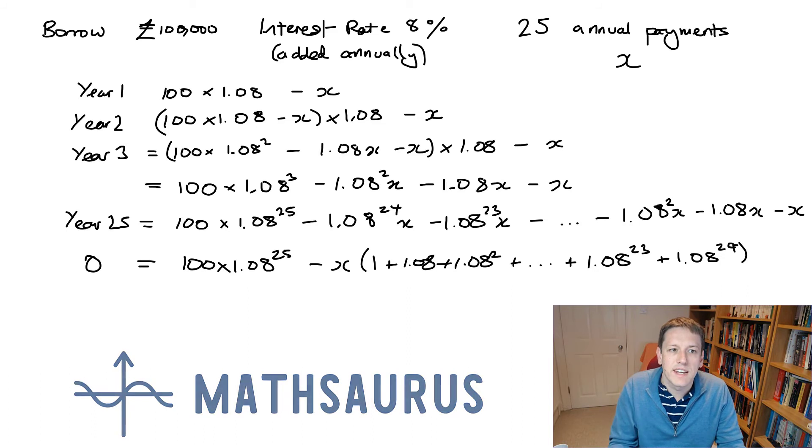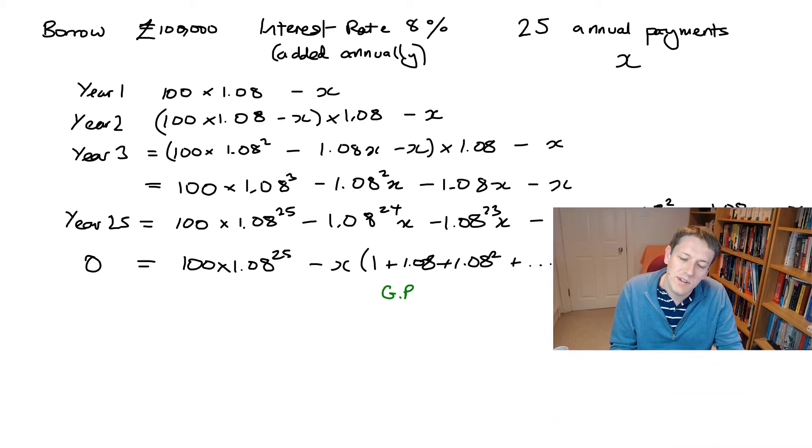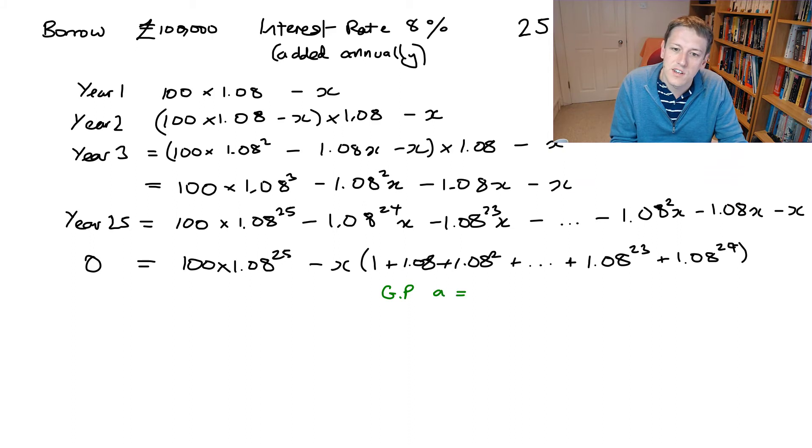So if you've done A level maths or you might know this anyway, this is a sequence and it's a particular type of sequence. It's a geometric progression and it's got the first term 1 and the common ratio 1.08. And so we know that the sum to 25 terms of a geometric progression here is just A times R to the n, here is 25, minus 1 divided by R minus 1. Look up the videos on geometric progressions if you don't know how to do that bit.